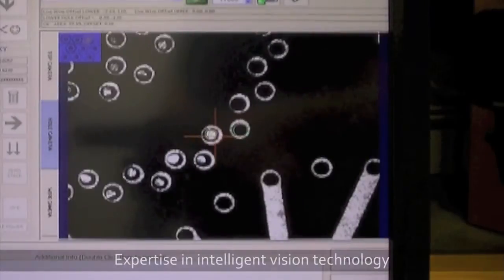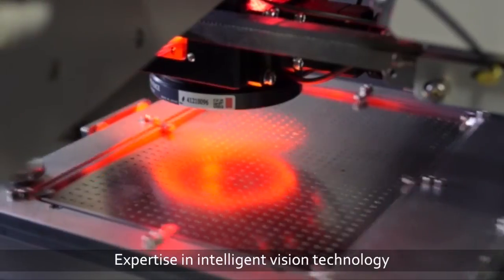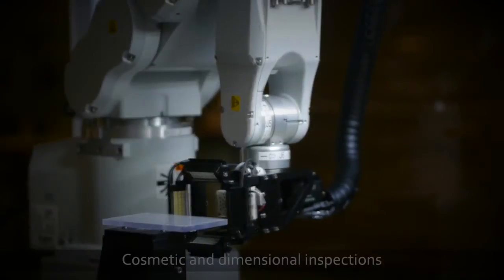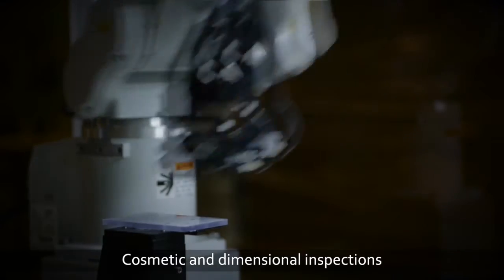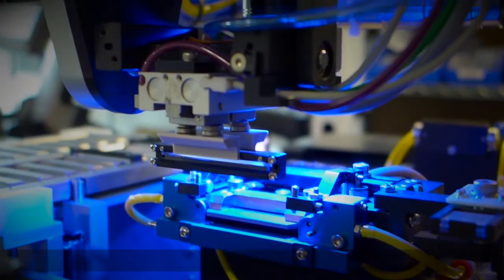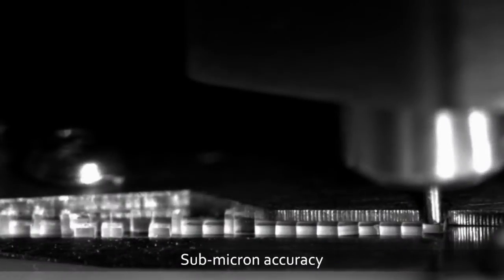Our equipment performs dimensional and cosmetic inspections that achieve two micron fixture repeatability at less than one second per measurement, with better than two micron accuracy. Precision automation is defined in microns and milliseconds.